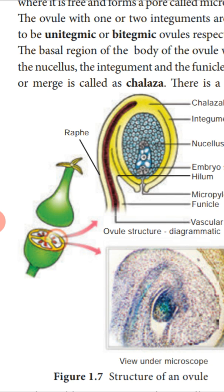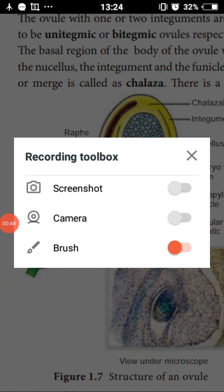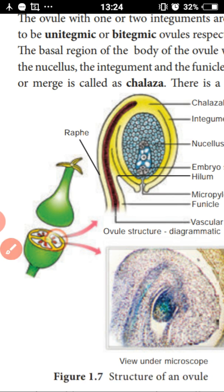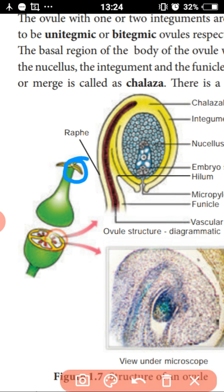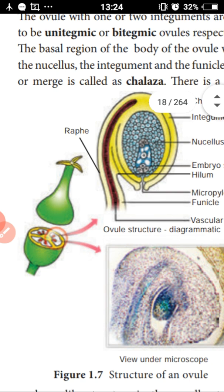Gynesium represents one or more pistils of the flower. A pistil refers to the ovary, style, and stigma. Ovary, style, and stigma together are called a pistil. Many pistils join together to form the Gynesium.